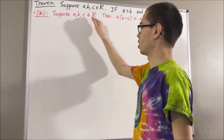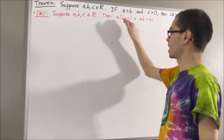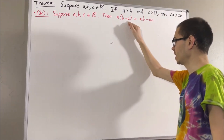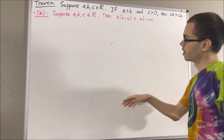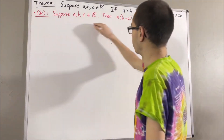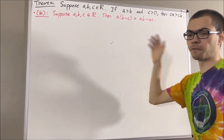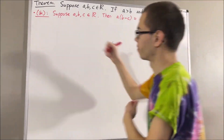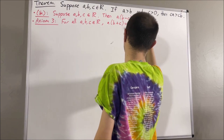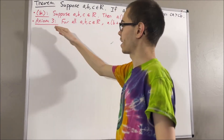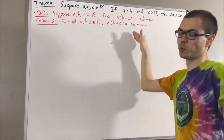Suppose A, B, and C are real numbers. Then A times B minus C is equal to AB minus AC. To prove this preliminary result, we are going to use the following axiom. We have axiom 3, which is just the distributive law.